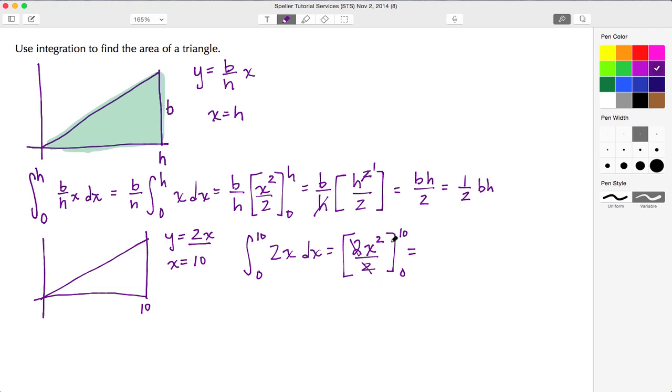So in fact when I substitute in the 10 I've got 10 squared which is 100, minus when I do the lower boundary 0 squared which is just 0. So I see here that my answer is 100 square units.